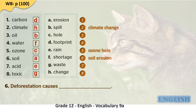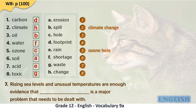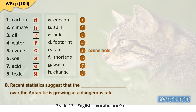Number six: deforestation causes soil erosion, because trees hold down the soil, and when deforestation happens the soil is eroded. Number seven: rising sea levels and unusual temperatures are evidence that climate change is a major problem that needs to be dealt with. Number eight: recent statistics suggest that the ozone hole over the Antarctic is growing at a dangerous rate.